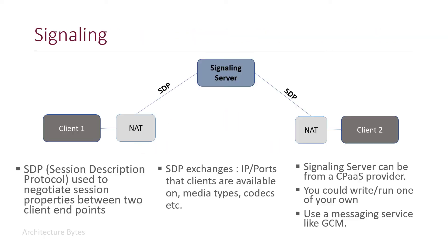Signalling uses SDP, or Session Description Protocol, to negotiate session properties between two client endpoints. The information exchanged includes IP ports that clients are available on, media types, and codecs to be used. You may use a signalling server provided by your platform provider, write and run your own, or even use a messaging service like GCM. The signalling server itself does not manipulate or change any data — it simply forwards messages from one client to another.